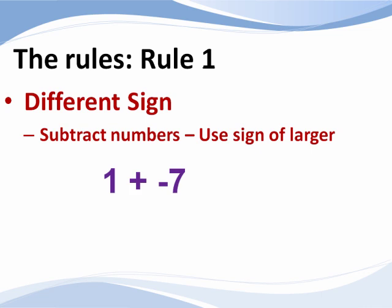Following the rule we just said, rule number 2, we find the difference between the numbers and then use the sign of the number with a greater magnitude. The difference between 1 and 7 is 6. The larger number is negative, so the answer is negative 6.